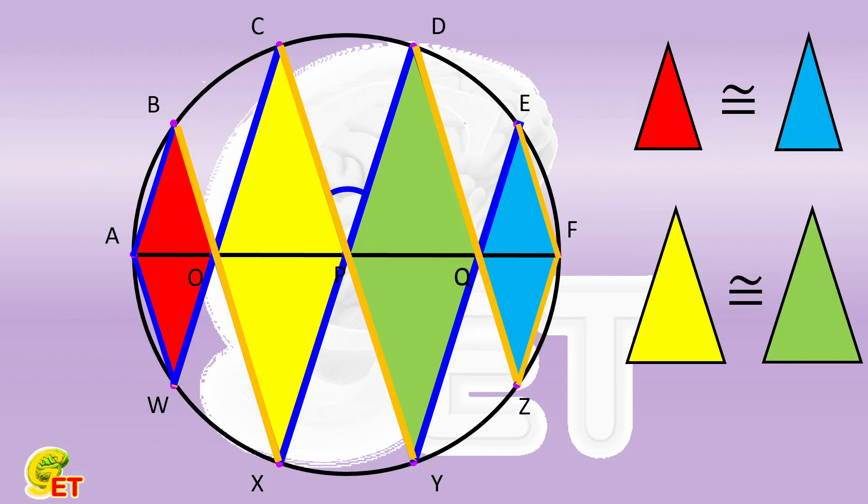For example, the angle CPD, which is also the central angle subtended by the arcs CD. Other examples include the angle AWC and the angle FZD, which are the inscribed angles subtended by the arcs AC and the arcs FD, respectively.